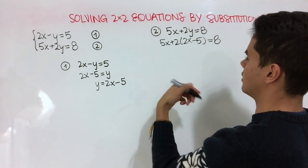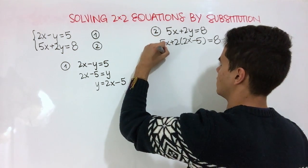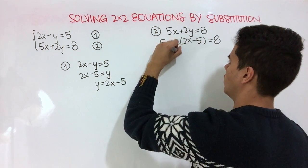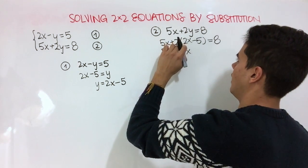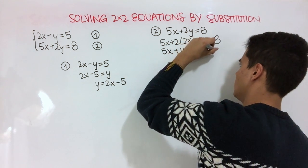So we're going to start doing some algebra here. Our 5x is going to remain the same, 2 times 2 is 4x, and negative 5 times 2 is negative 10, is equal to 8.